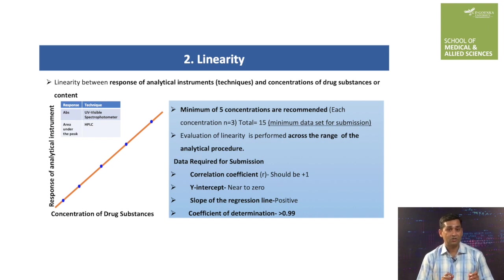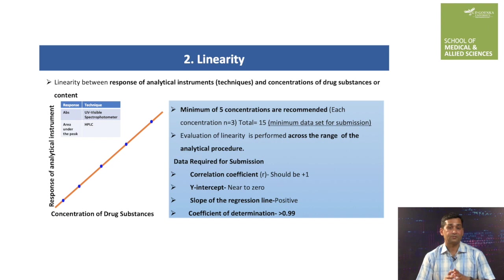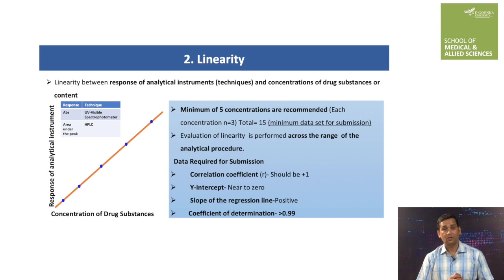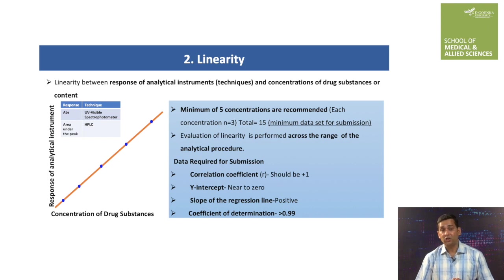Linearity is the second parameter of analytical method validation. Linearity means the responses of the analytical instrument or technique must be linear with the concentrations of the drug. The response depends on which analytical technique is being used — for example, if we are using UV-visible spectroscopy, the response would be absorbance; if we are using HPLC, the response would be area under the peak. The left side of the slide shows a straight line curve representing linearity between detector response and drug concentrations.